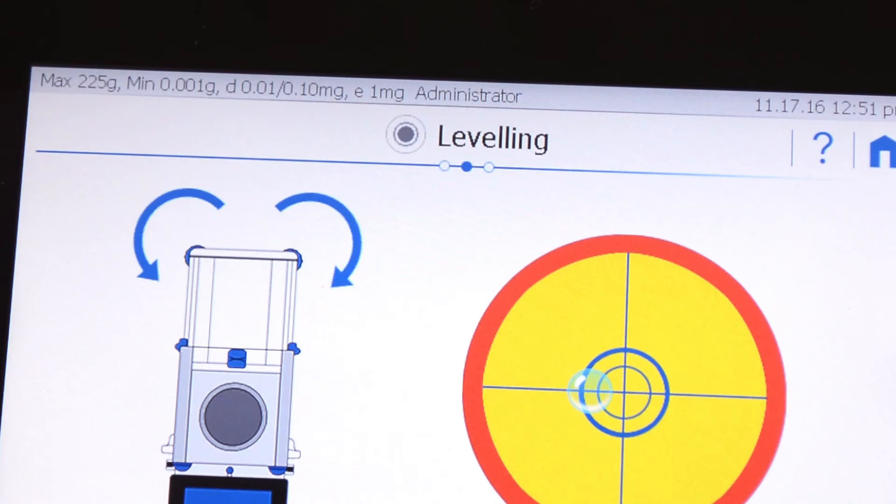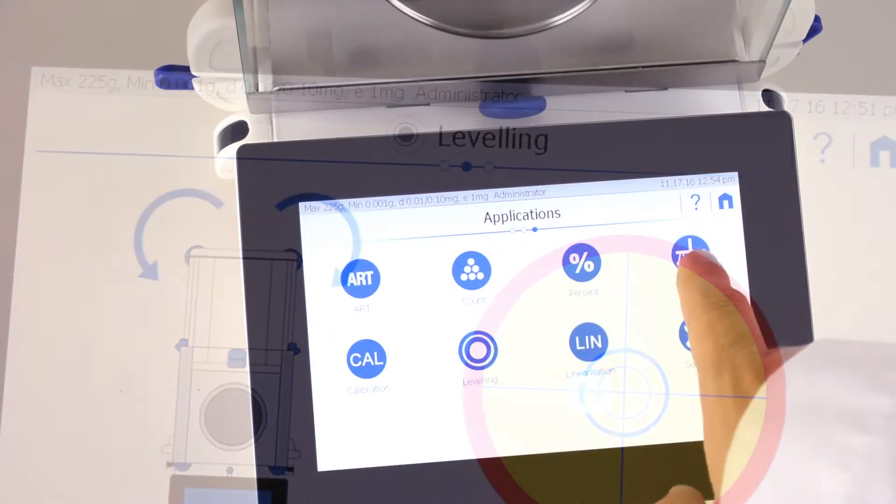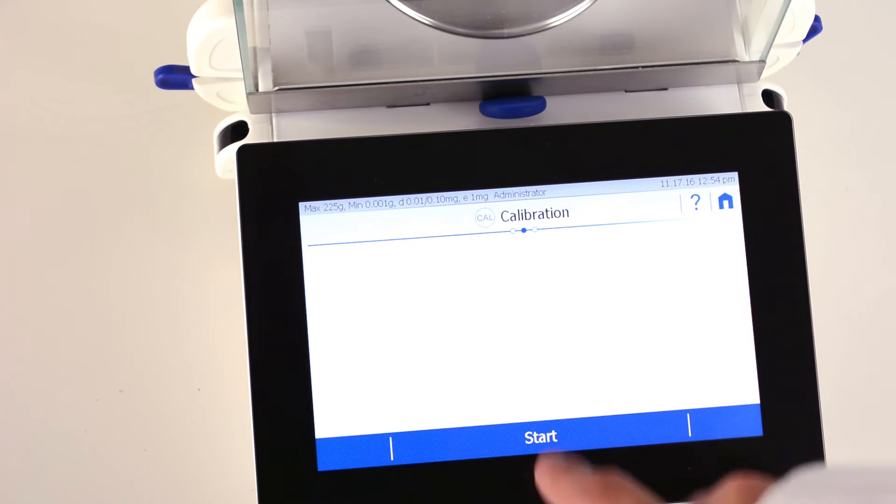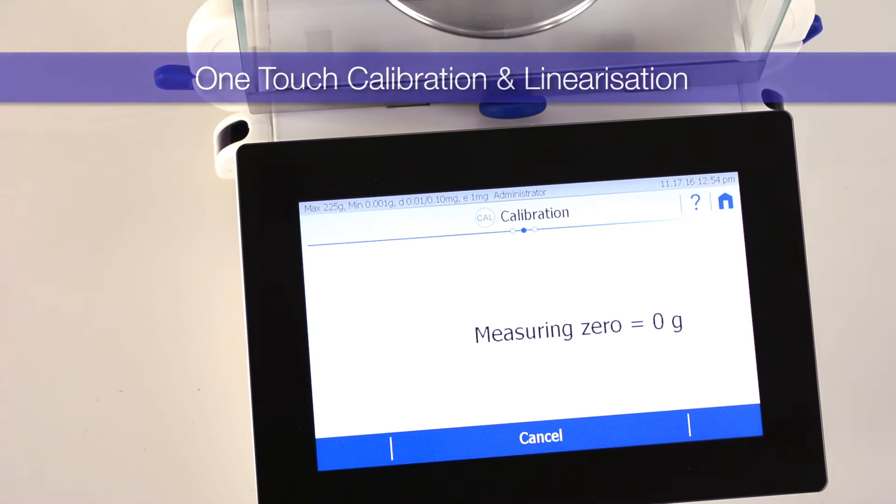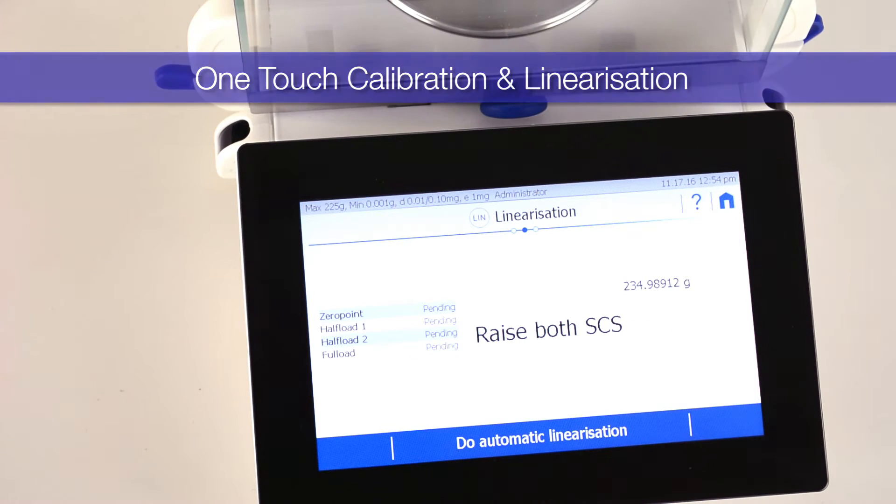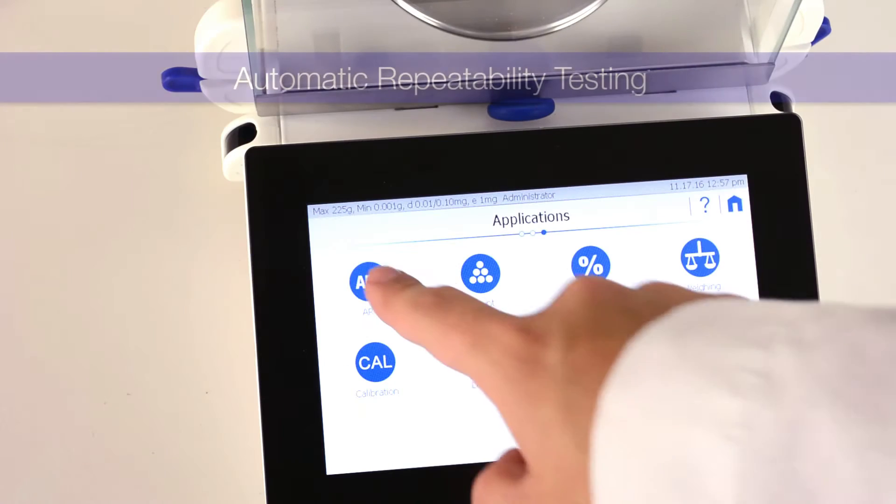All these actions can be accessed by swiping to the right and selecting the corresponding app. Calibration takes only one touch, as does linearization with the self-linearization system. You can test repeatability with the automatic repeatability test app.